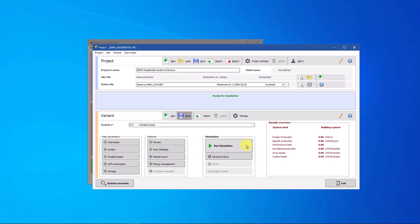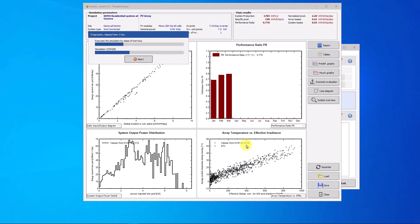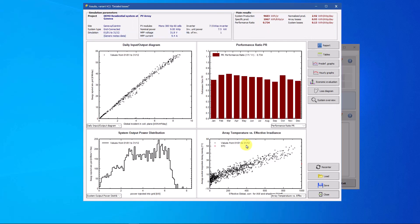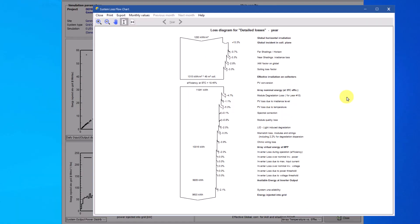You can now run the simulation. The module degradation loss can then be found in the loss diagram. It is the first loss happening after the PV conversion and is located right on top of the lower part of the diagram.